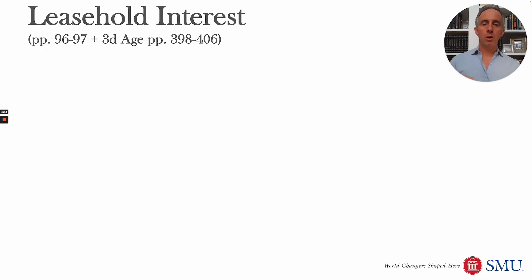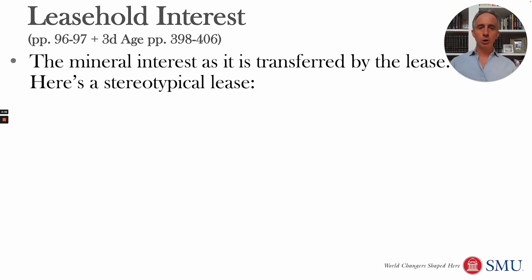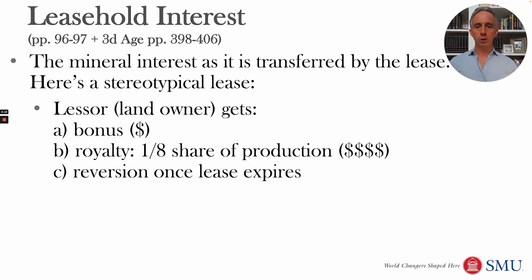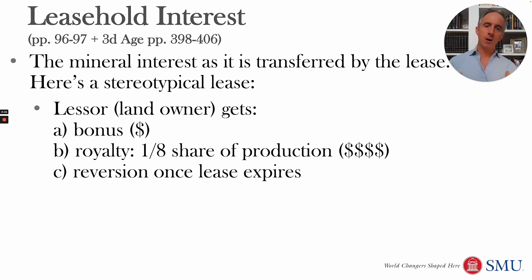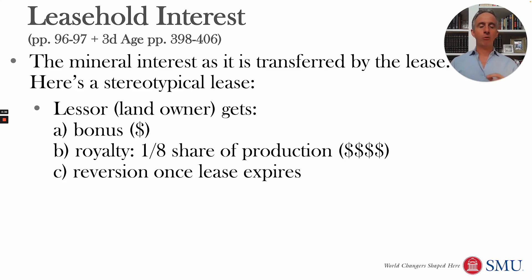If you are a landowner with oil and gas on your land, the most common way to make money is by leasing your land to an oil and gas company that develops it and gives you money in return. Here's what a very typical lease looks like. Typically the lessor — the landowner — receives some money up front called the bonus, which could be a significant amount or not much, depending on the situation.